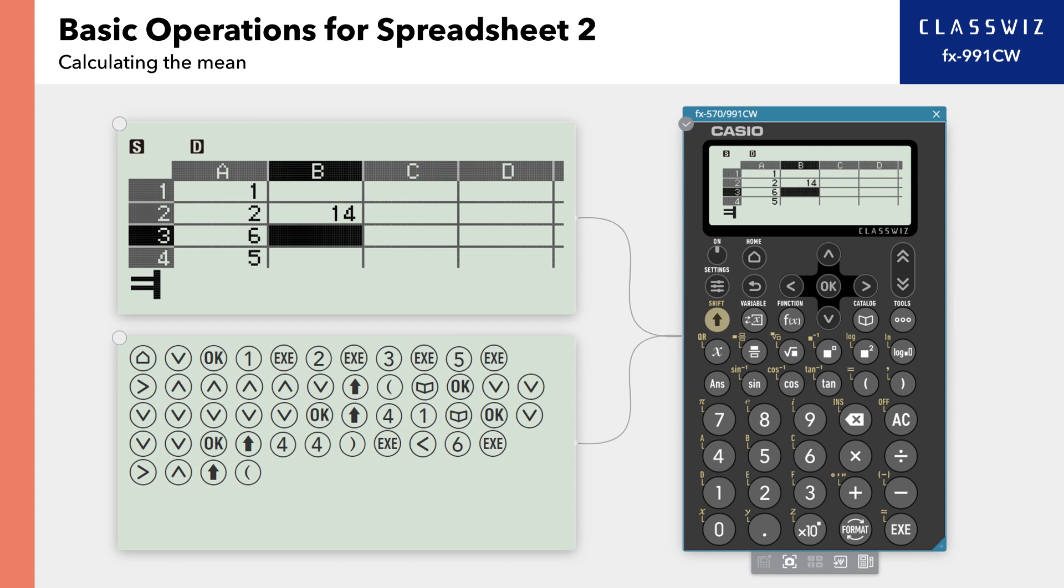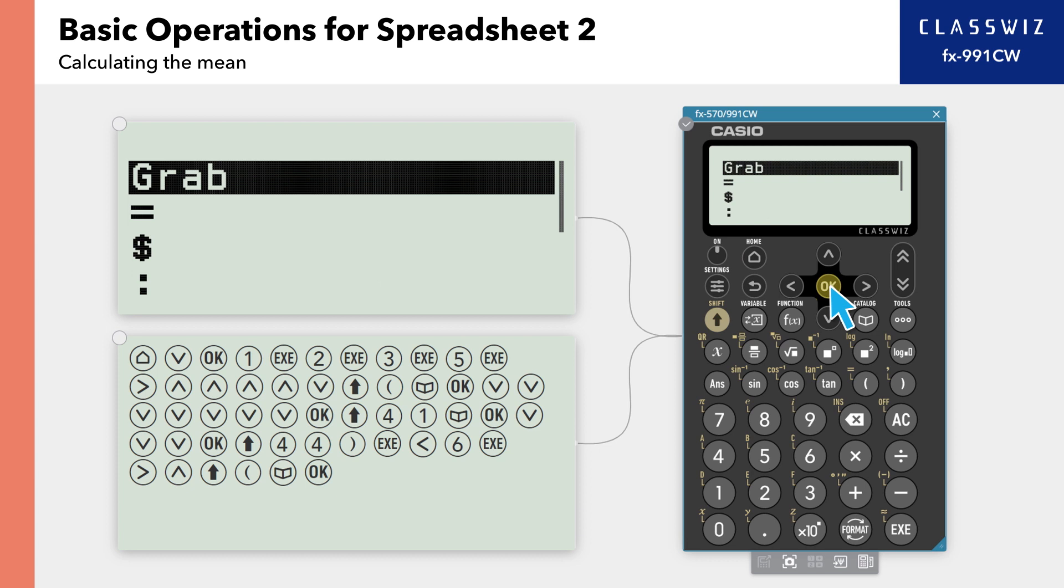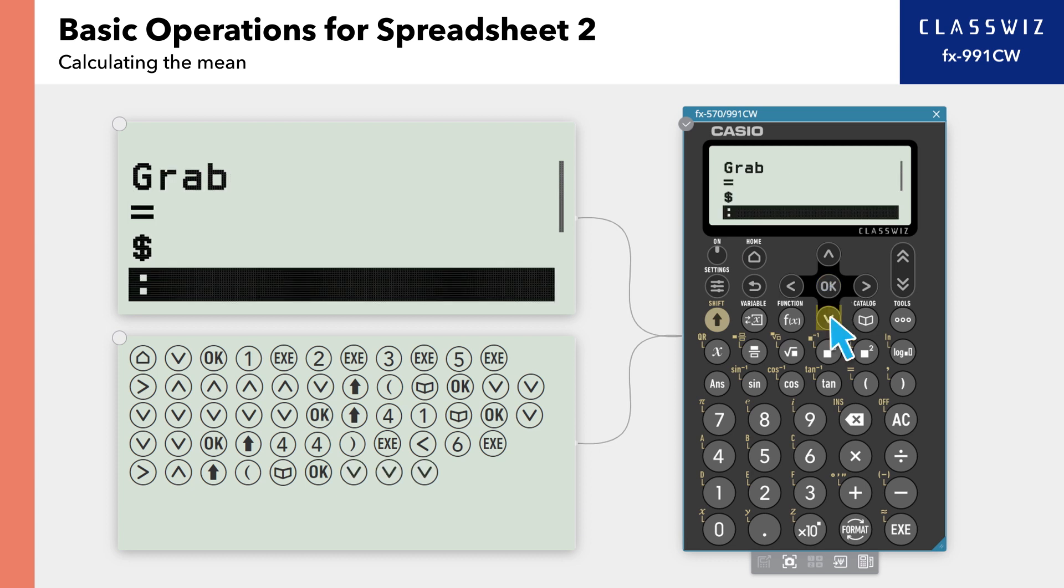Press Catalog, then select Spreadsheet. Scroll down to the bottom and select Mean.